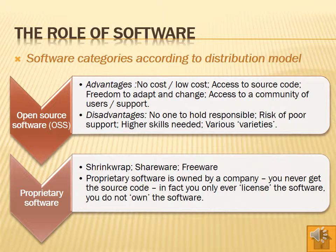Proprietary software is software that you buy from a company, or you may get it as shareware or freeware. Proprietary software is owned by a company — you don't own the source code, you only get a license to use it. With open source software, however, you can even contribute to the source code and contribute to the programming. There are advantages and disadvantages of both, which you can read about in your textbook on page 110.